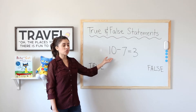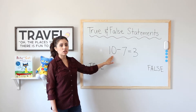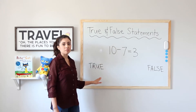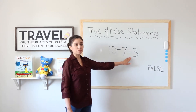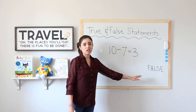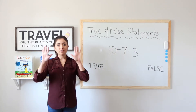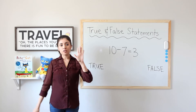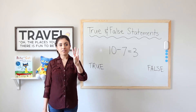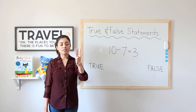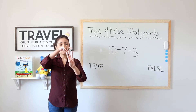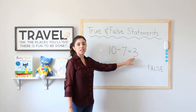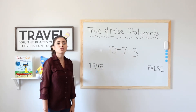10 minus 7 equals 3. Let's subtract 7 from 10. If I get 3, my statement is true; if I get something else, it's false. I have 10 fingers — let's put down 7. I have 5 on one whole hand, 6, 7. How many fingers do I have left? 1, 2, 3. 10 minus 7 equals 3. This statement is true.